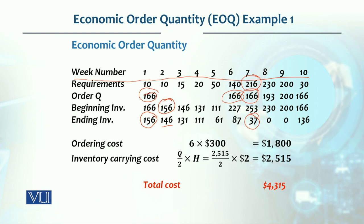Week 7 ending inventory was 37. When we go into week 8, we have 37 units. If we order 166 more, that does not meet the demand. So when the shortfall exceeds 166, we place an order for the exact requirement. In week 8, the requirement was 230, we had 37, so the shortfall was 193, which is more than 166. We placed an exact order for 193 units, not a multiple of 166.